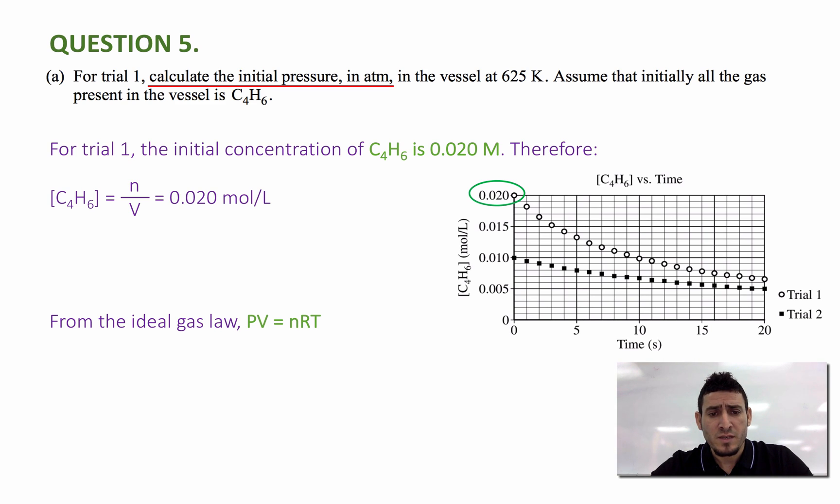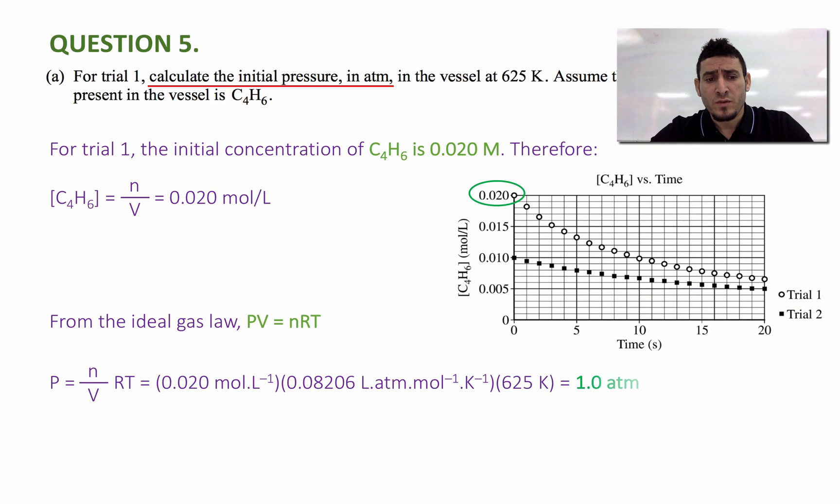I can say that pressure is equal to n over V times RT. So now I can replace n over V by the concentration term, which is 0.020 mole per liter, multiplied by the ideal gas law constant R, which is 0.0821 liter atmosphere per mole Kelvin.